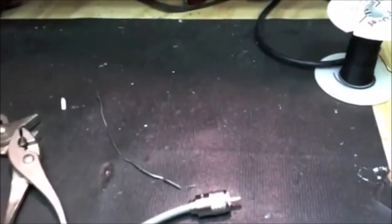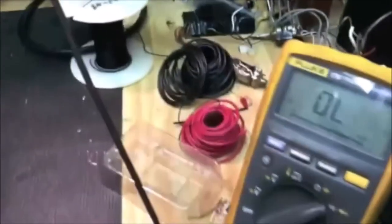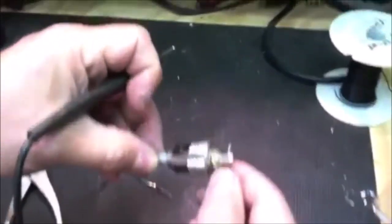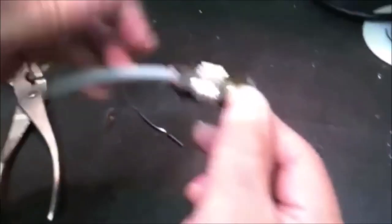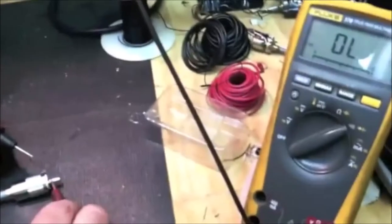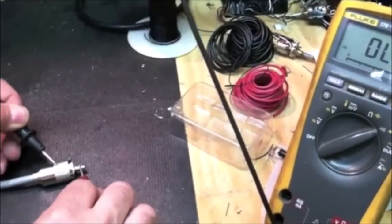The final step, if you have an ohmmeter, is to check the continuity. You basically want to make sure that from the center conductor to this part, you have no continuity. Zero continuity. So from here to here, no continuity.